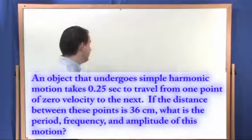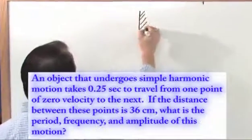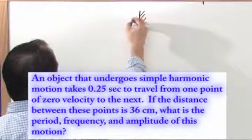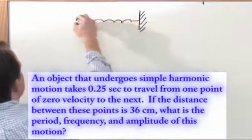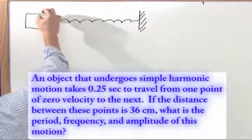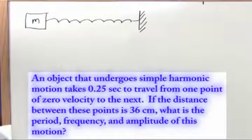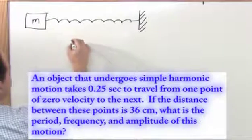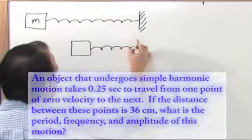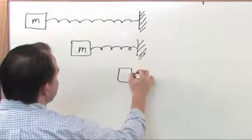So the first thing you really should do is draw a picture because it really helps. So here's a wall. It's simple harmonic motion. I like to talk about springs because they make a lot of sense to me. So we have a mass here. An object is doing simple harmonic motion. It takes 0.25 seconds to travel from one point of zero velocity to the next. So here let's say it's stretched all the way. Let's say here's an intermediate position. And then let's say here is the compressed position right up against the wall.